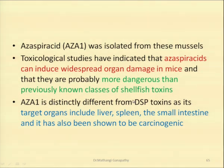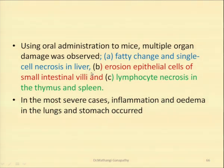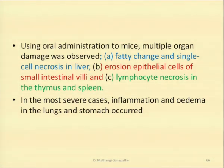AZP is distinct from DSP toxins because the target organs include the liver, the spleen, the small intestine, and it also has the potential to be carcinogenic. When mice were orally administered AZP, multiple organ damage was observed: fatty change and single cell necrosis in the liver, erosion of the epithelial cells of the small intestine, alveoli, and lymphocyte necrosis in the thymus and the spleen. In the most severe cases, inflammation and edema in the lungs and the stomach also occurred. This led scientists to conclude that AZP must be the most damage-causing toxin compared to other shellfish toxin classes.